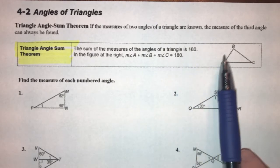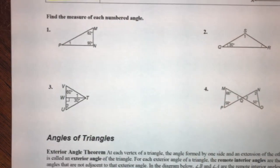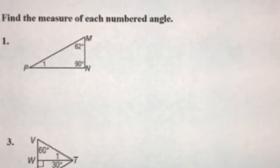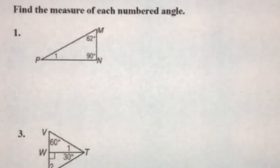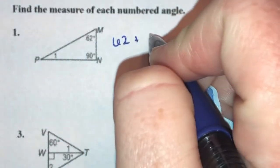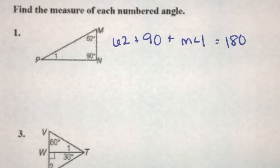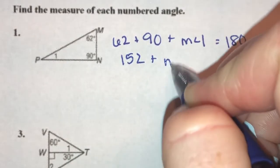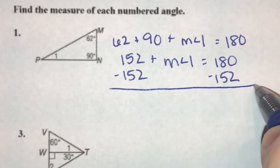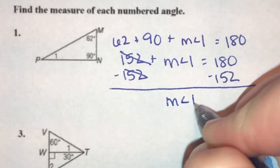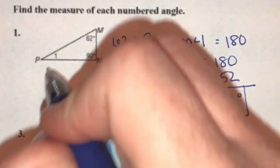So over here, angles A, B, and C all add up to 180 degrees. We can mathematically find angles. For number one, if this angle is 62 and this one's 90, we can automatically find that third angle. 62 plus 90 plus whatever the measure of angle one is, they're all going to add up to 180. 62 and 90 is 152. Subtract 152 from both sides — the measure of angle one has to be 28 degrees.